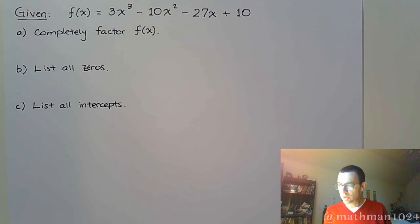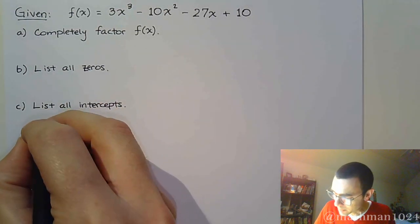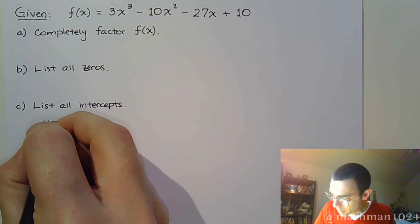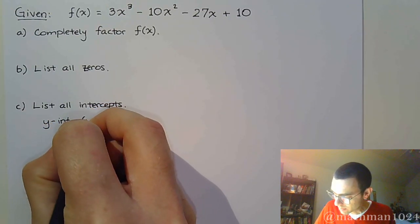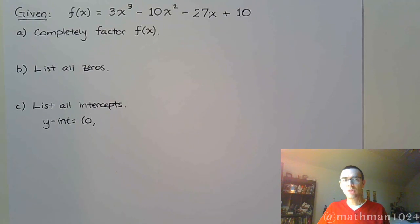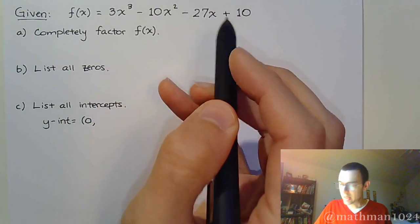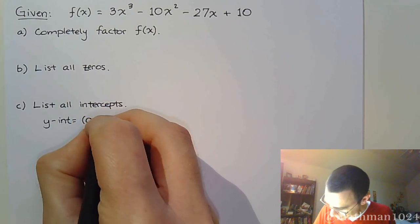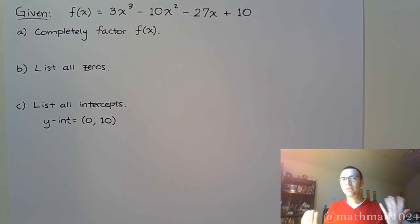The one thing we can do right now without a lot of work is find the y-intercept — that's usually the one thing a lot of students forget to write. When x is zero, all the other terms go away except for 10, so the y-intercept is 10.